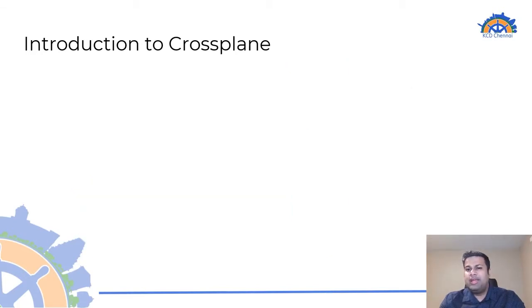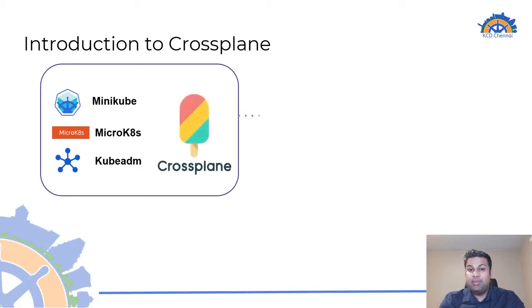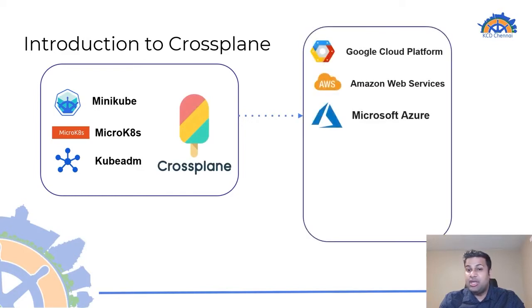Crossplane is an open source tool that is installed directly on top of Kubernetes as an add-on. We can quite literally make use of any Kubernetes distribution, even minimal distributions such as Minikube, MicroK8s, or clusters created using the Kind utility or the Kubeadm tool. Once installed, Crossplane enables orchestrating infrastructure or managed services on multiple platforms such as GCP, AWS, Azure, and Alibaba Cloud by making use of the Kubernetes API. This is done by means of providers, which we'll discuss in detail in the upcoming slides.